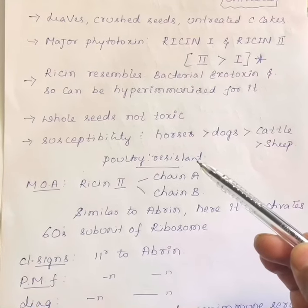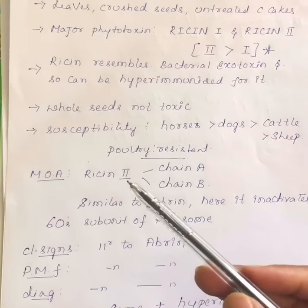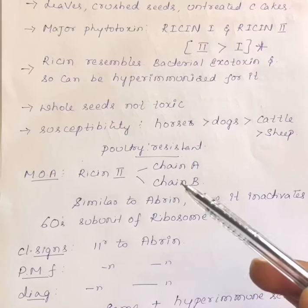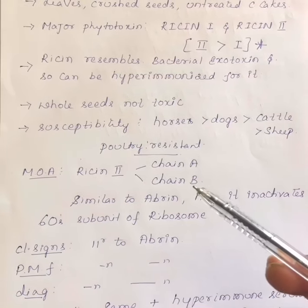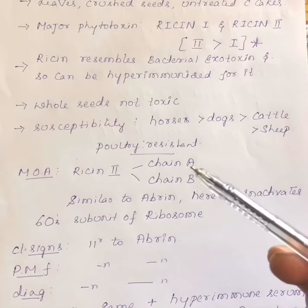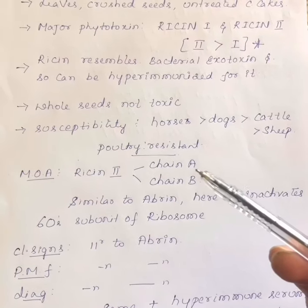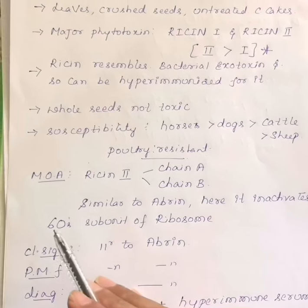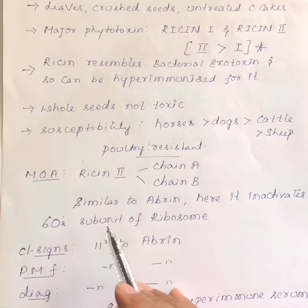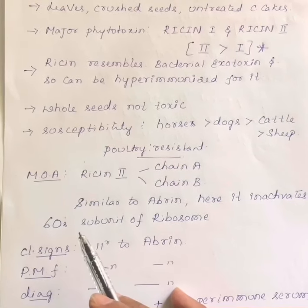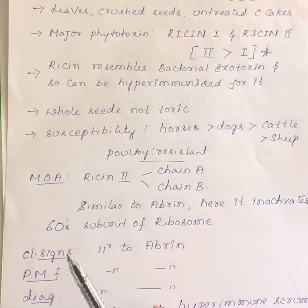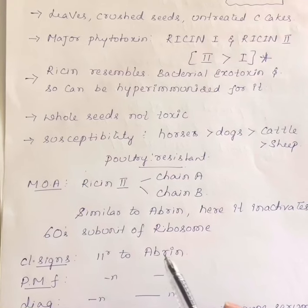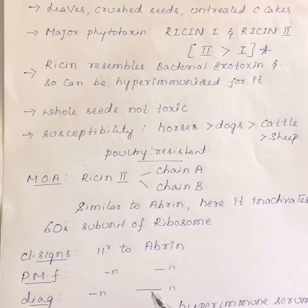Susceptibility: pigs are more susceptible than dogs, more susceptible than cattle, more susceptible than sheep. Poultry are generally resistant. The mechanism of action is similar to abrin: ricin-2 also contains chain A and chain B. Chain B binds to the host cell membrane and helps in internalization of chain A, which inactivates the ribosome. However, ricin inhibits the 60S subunit of the ribosome, whereas abrin inhibits the 26S subunit of the ribosome.